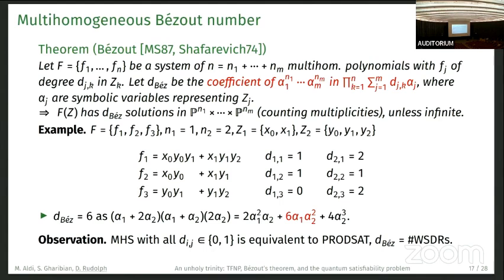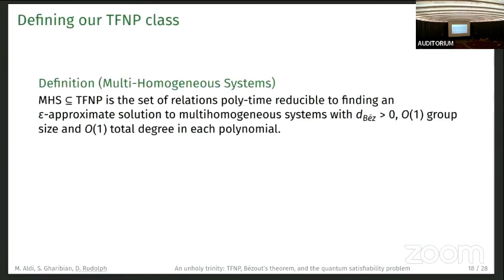What we can observe is that if we have a multi-homogeneous system where the degrees are all either zero or one, this is exactly equivalent to ProdSAT. There's no reduction or anything, it's just equivalent. The Bézout number can be shown to be the number of weighted SDRs. Checking if the Bézout number is zero or not is easy, it's just finding a match effectively. But computing this is hard. I think it's sharply hard because we have to count all these solutions and it can be an exponential number.